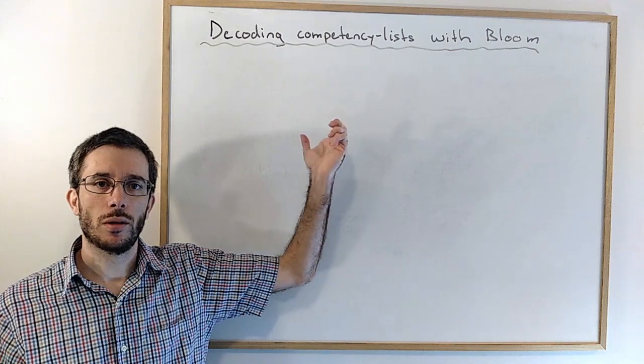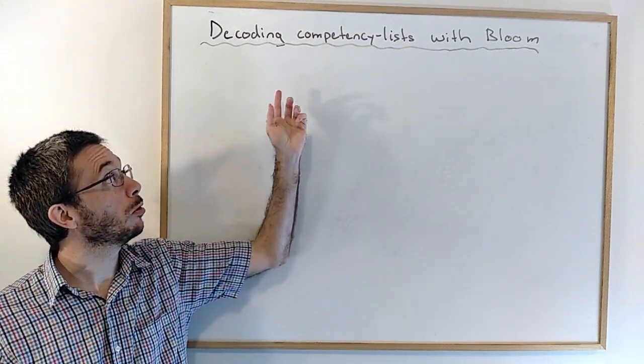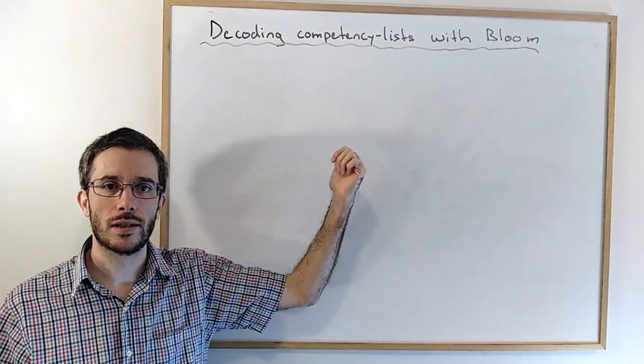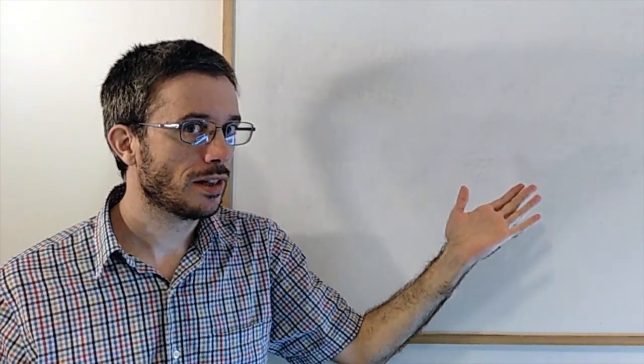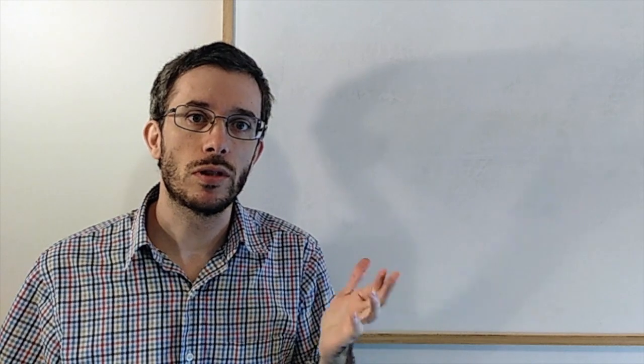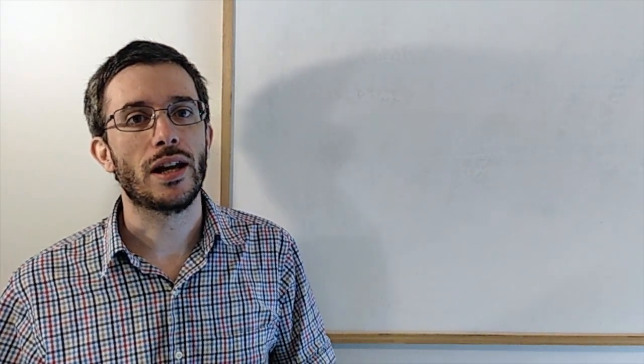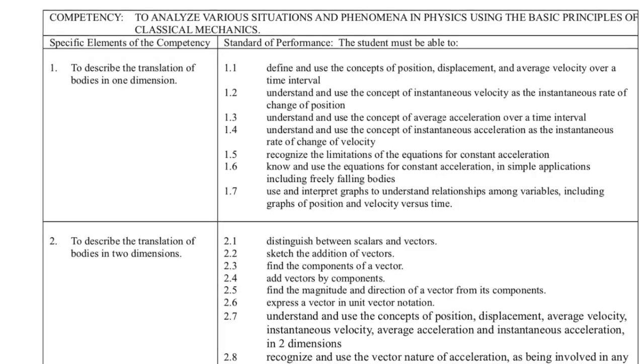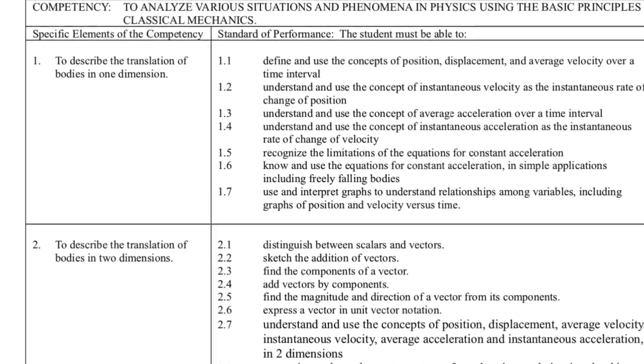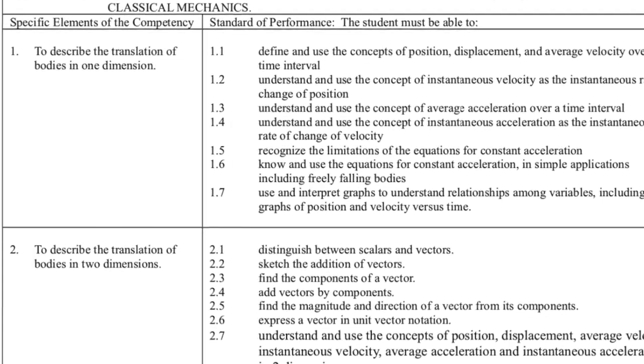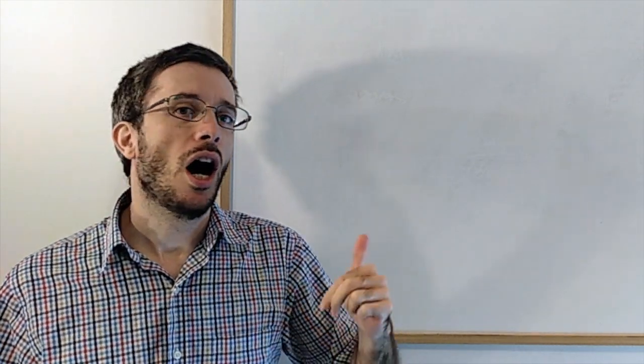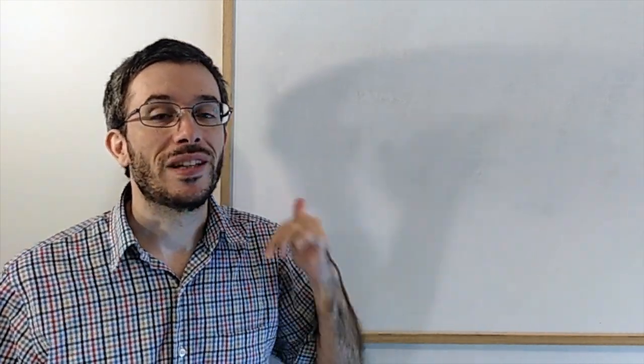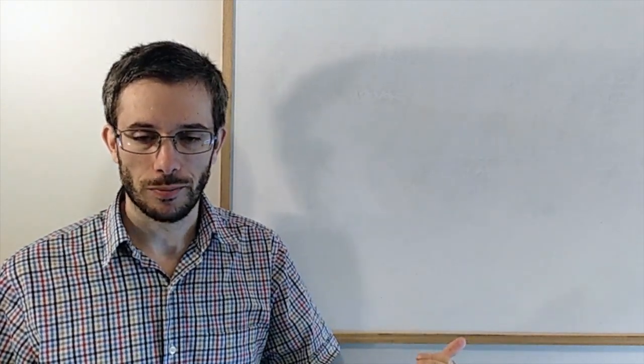In this video, I want to talk about how you can decode the competency lists using Bloom's taxonomy. Competency lists? Yes, these are those lists that usually you get at the end of your course outlines. If you understand how to read them, they not only tell you what's going to be in the course, but also how these things are going to be tested or what is expected of you.